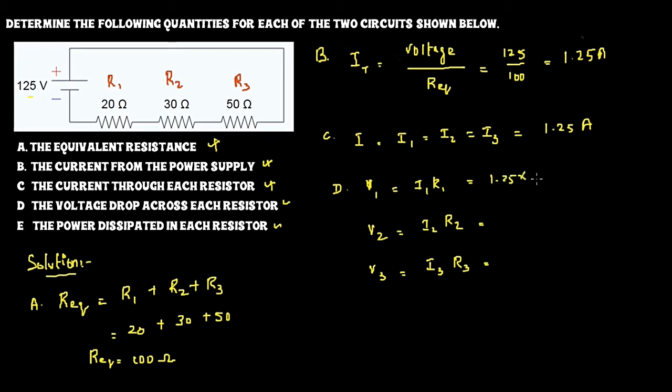So 1.25 multiplied by the resistances, you will be getting the values of the voltage drop across each resistor. The voltage drop across resistor one is 25 volts, the second is 37.5, the third one is 62.5.